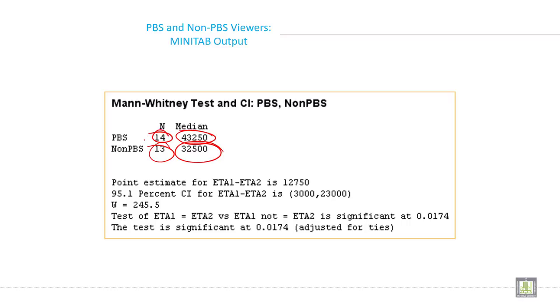Here the point estimate is this, and the 95% confidence interval for both is this, and the value of W is 245.5. The test is significant at 0.0174 because the p-value is less than 0.05. So here you can conclude to reject the null hypothesis.